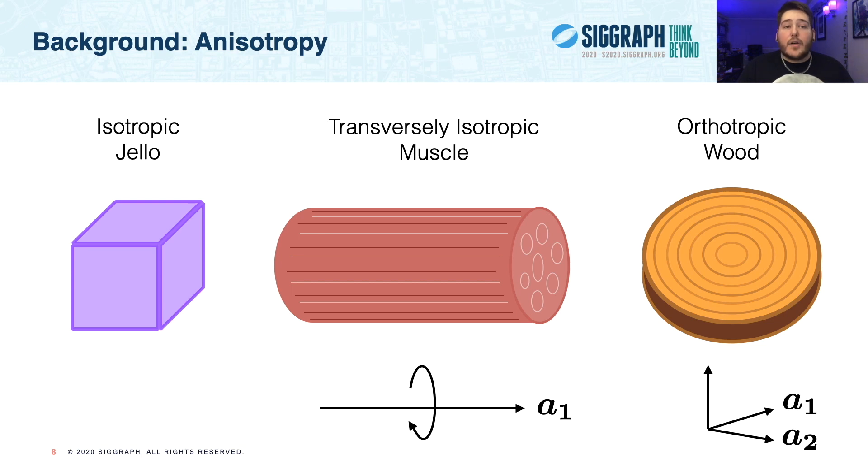Second, transversely isotropic materials have an underlying structure that strengthens just one axis of the material, and we'll call this axis A1. Many biological tissues do exhibit transverse isotropy, including muscles, which allow different deformations in the longitudinal and transverse directions.